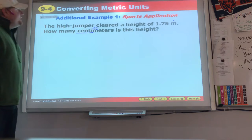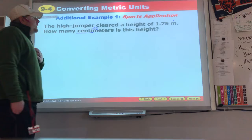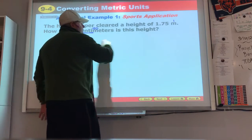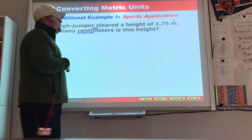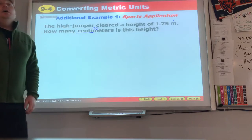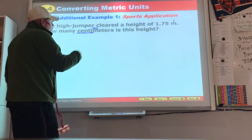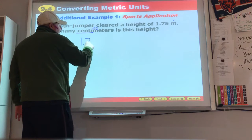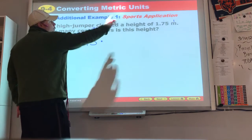The high jumper cleared a height of 1.75 meters. How many centimeters is this? Well, 100 centimeters makes one meter. And if you look at centi, centi means a hundred. So we're going from something big to something smaller.